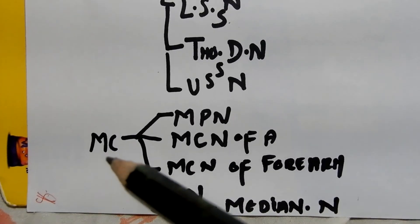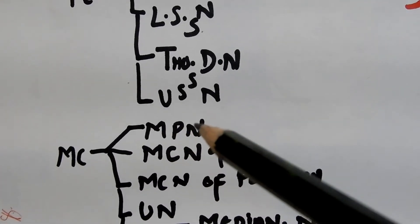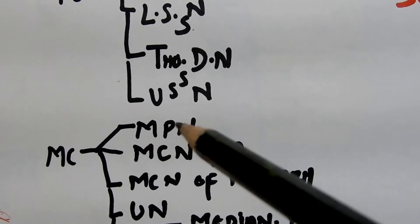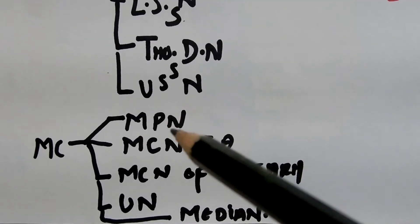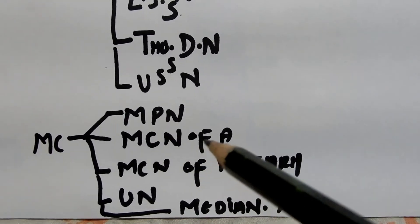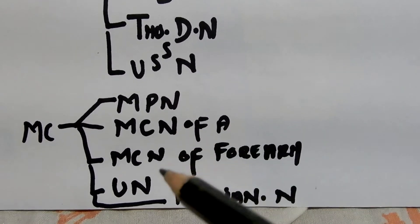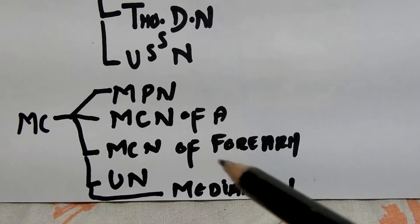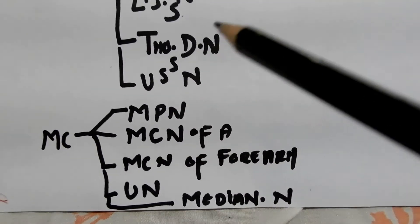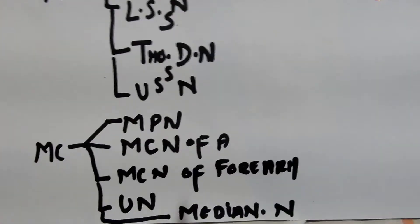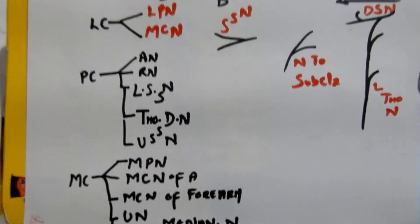From the medial cord we have medial pectoral nerve, medial cutaneous nerve of forearm and arm. This is very easy to remember: ulnar nerve and median nerve. These are the nerves given here. Obviously you need to memorize everything - nothing can be left.